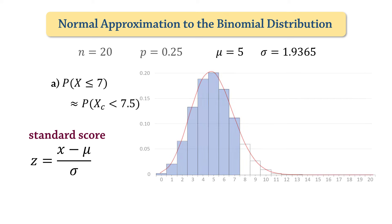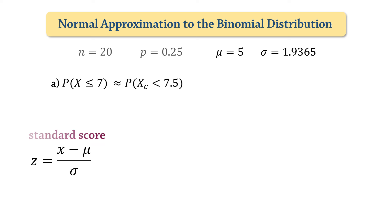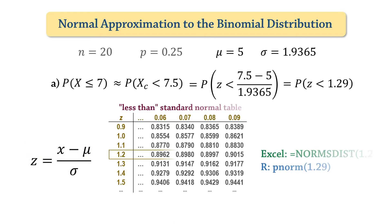Therefore, the probability that x is less than or equal to 7 with continuity correction will be approximately equal to p of x less than 7.5. Note that with continuous distributions, there is no distinction between x less than 7.5 and x less than or equal to 7.5. So this gives p of z less than 7.5 minus 5 divided by the standard deviation. That is, p of z less than 1.29, which gives 0.9015.